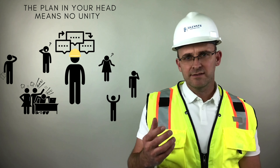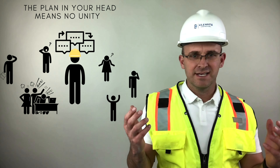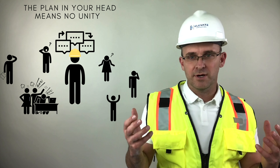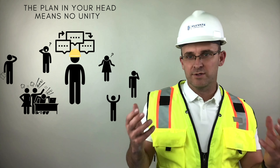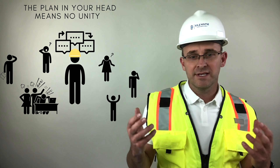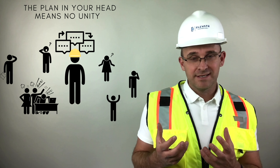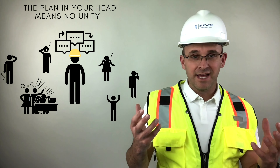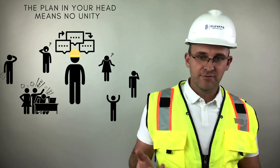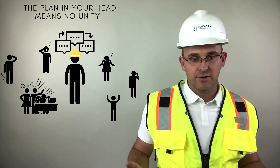This is because if everybody on the project site doesn't know how to interact with the project plan, know where the project is going, what they're supposed to be doing, or who they're supposed to be working with — and the plan isn't clear, maybe it's in the superintendent's head — then you'll have people frustrated, asking questions like, 'I don't really know what's going on.'